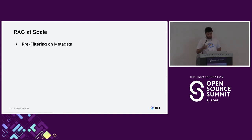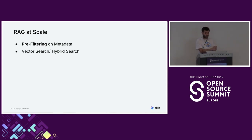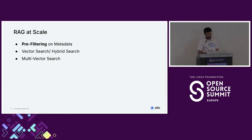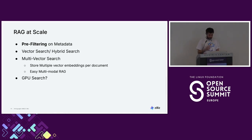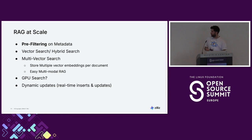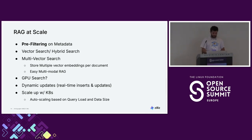If you want to do it at scale, don't forget filtering — filter on metadata so you don't have to search through everything. You can also do hybrid search — instead of only searching vectors, you can do keyword search at the same time. We also support multi-vector search, which is very good for multimodal use cases. GPU search if you reach a really big scale. And don't forget dynamic updates — real-time inserts and updates of your data so you don't become outdated. You can then scale up with Kubernetes, auto-scaling based on query load or data size.